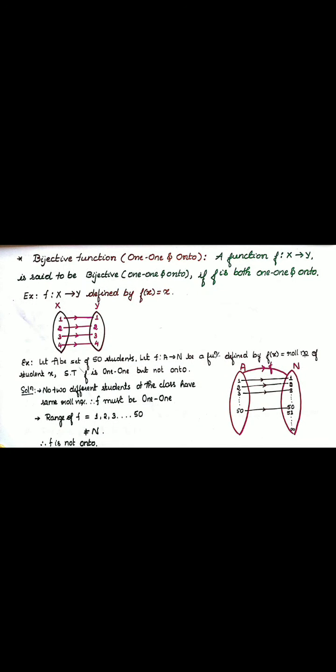Okay, next type is bijective function. Bijective function is also called as one-one and onto function. One-one function and onto function both are true at the same time.